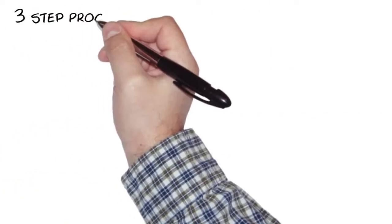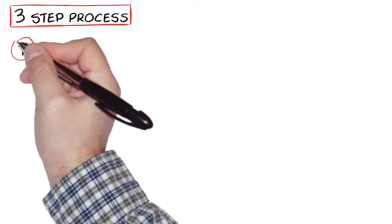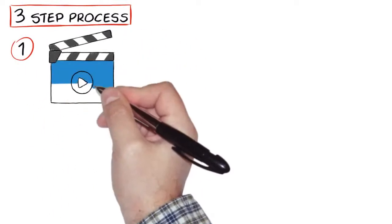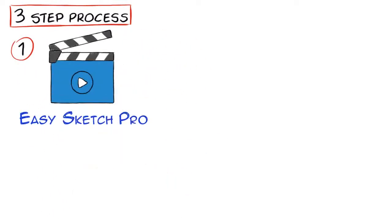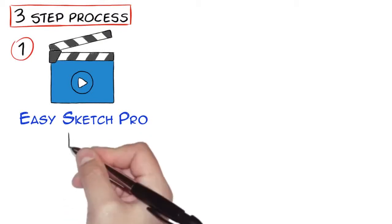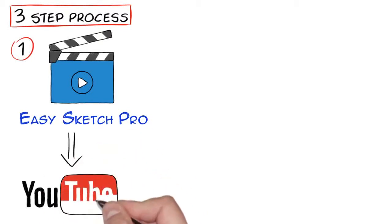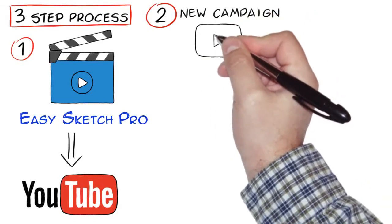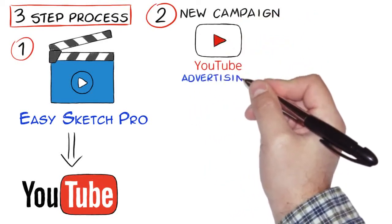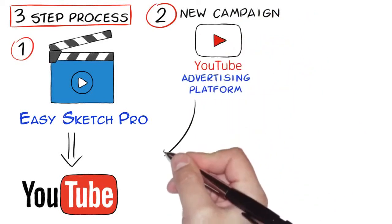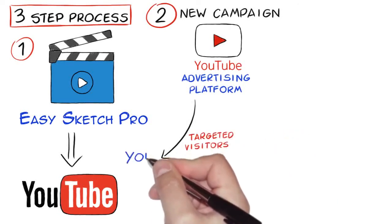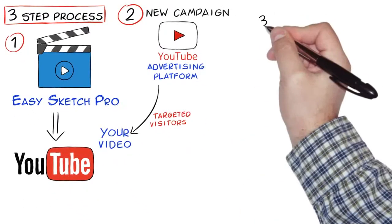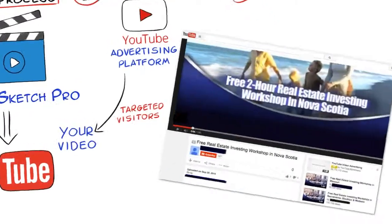It's a simple three-step process. One, create an attention-holding video using EasySketch Pro or your favorite video software and upload it to YouTube with the link in the description and caption back to your website or your offer. Two, create a new campaign using YouTube's video advertising platform and super drive targeted visitors to your video on YouTube. And three, sit back.